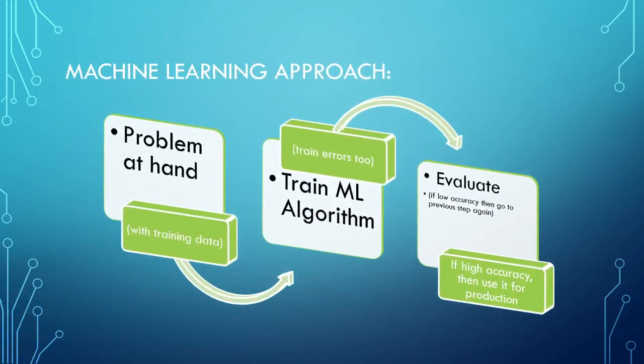Let us understand the approach. We have a problem at hand with training data. We train the ML algorithms, then evaluate. If there is high accuracy, we use it for production directly. If there is low accuracy, we go back, retrain the algorithms incorporating the errors, then evaluate again, and so on.